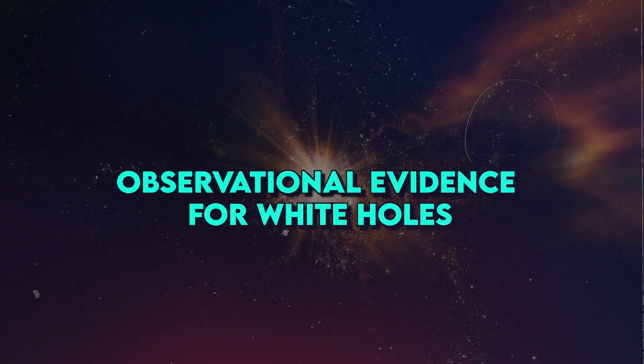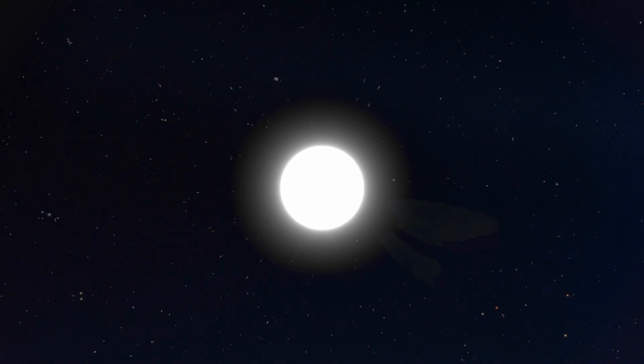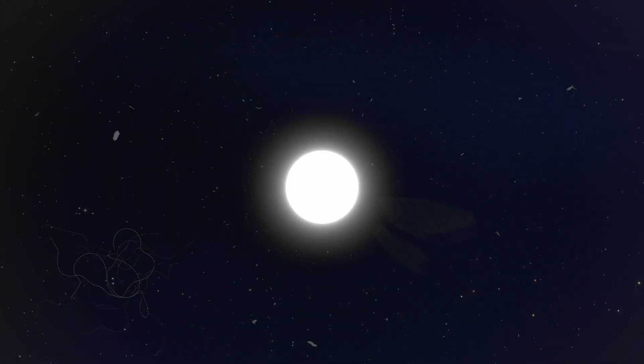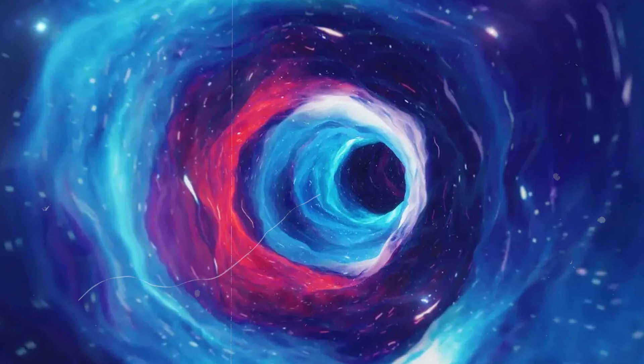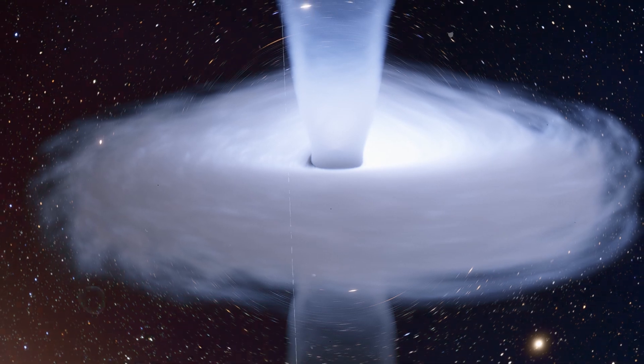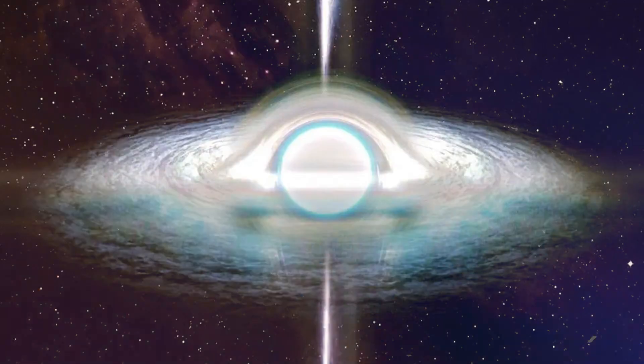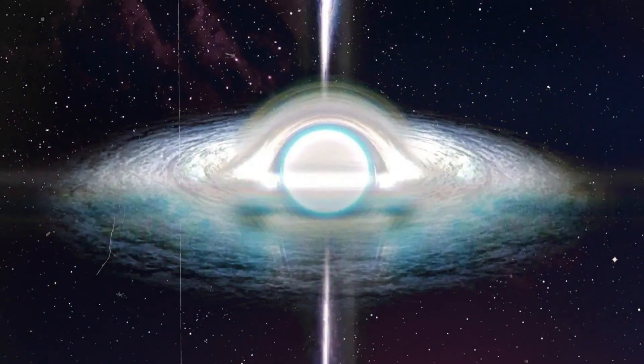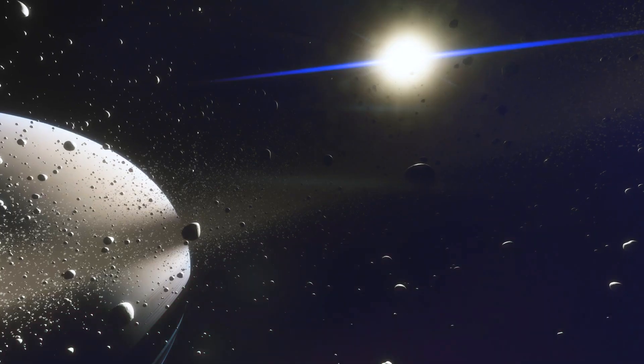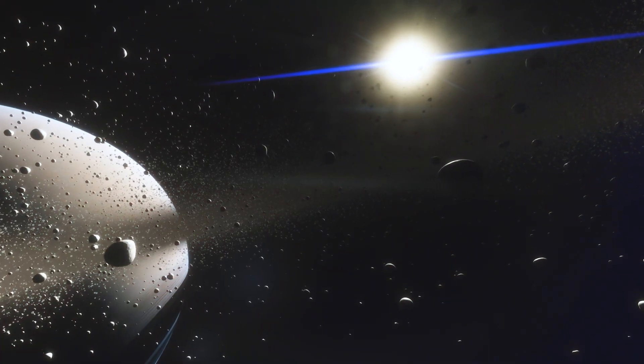Currently, there is no direct observational evidence for the existence of white holes. While black holes have been observed indirectly through their effects on nearby matter and light, no such evidence exists for white holes. Theoretical models predict that white holes could emit intense radiation and be extremely bright, making them potentially observable cosmic phenomena.